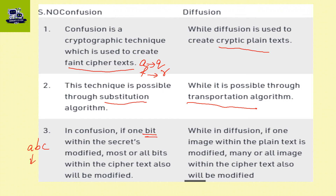In diffusion, if one bit within the plaintext is modified, many or all bits within the ciphertext will also be modified. So if we change one bit, we can change everything.